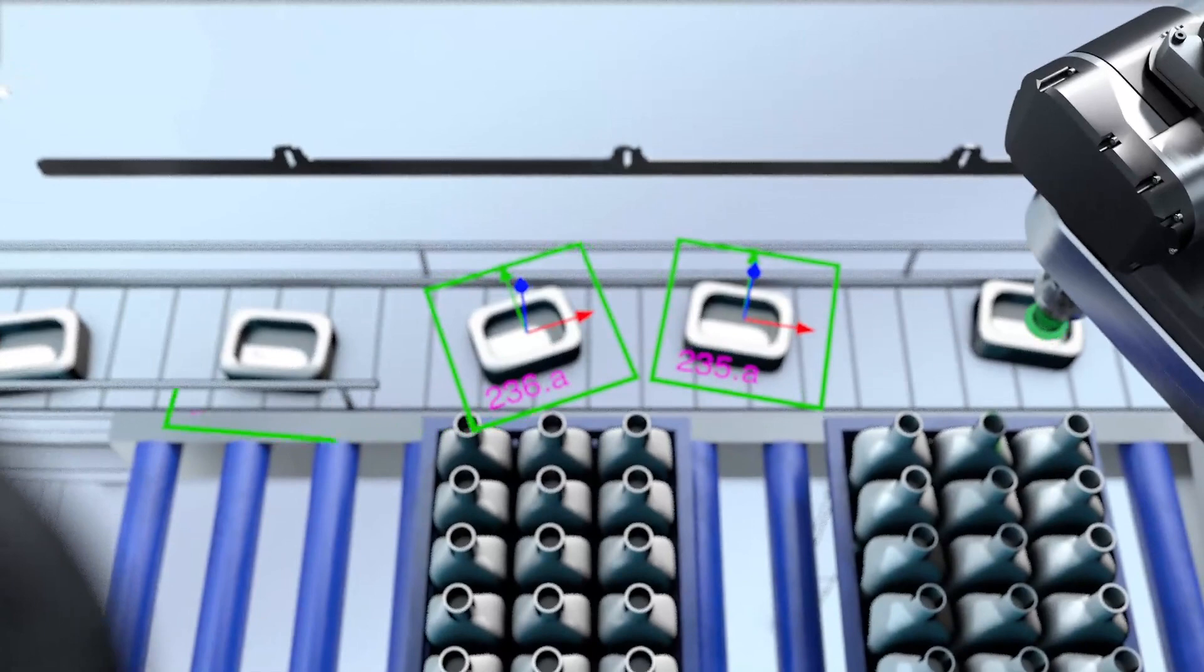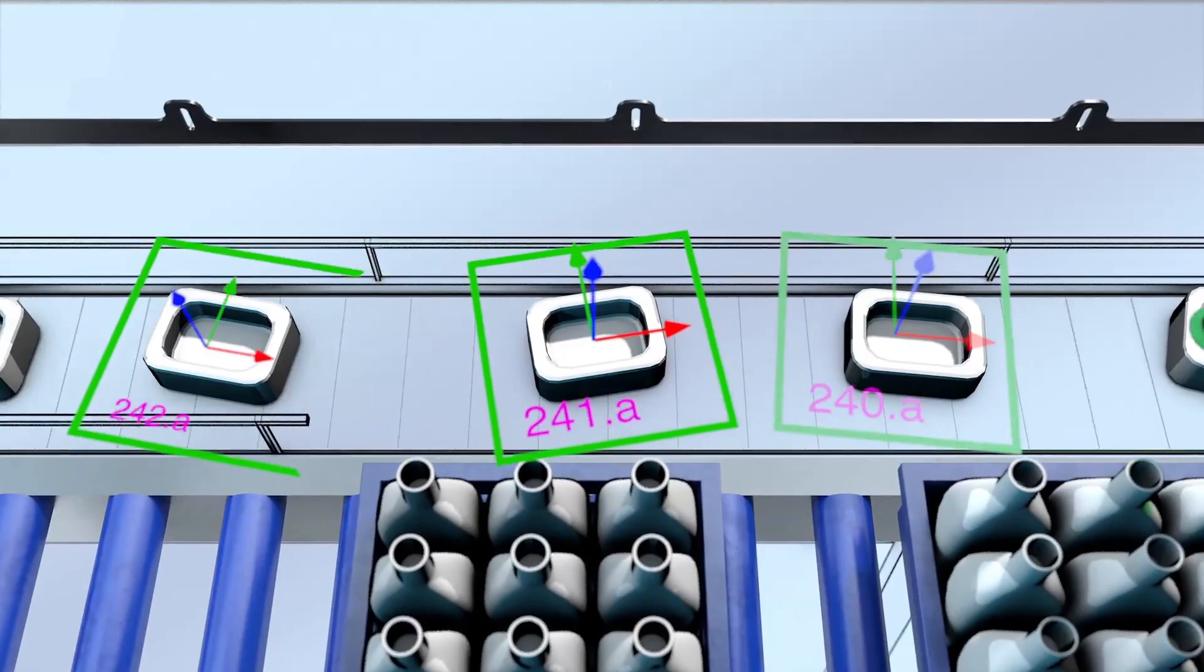Thanks to the artificial intelligence, the puck's shape, dimensions and color can vary without any problems.